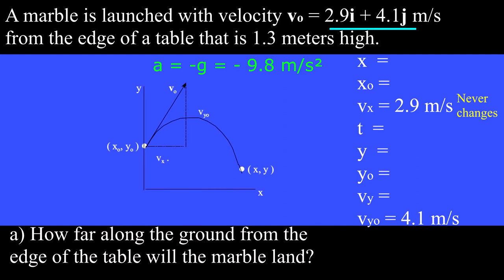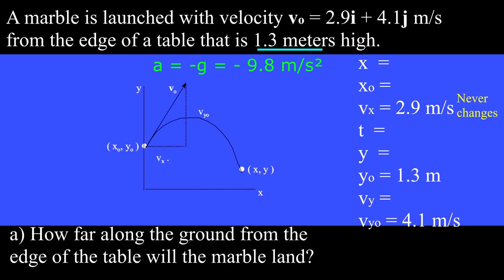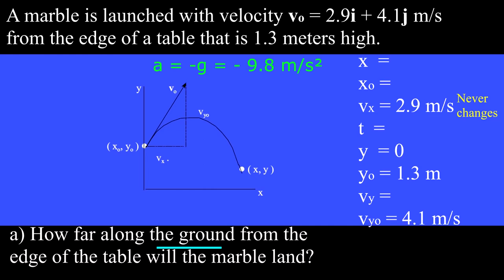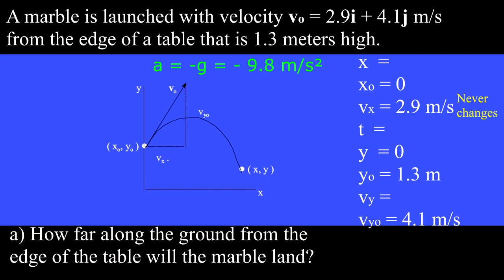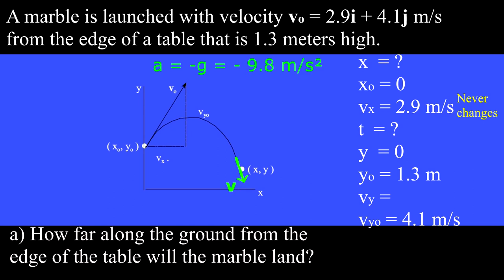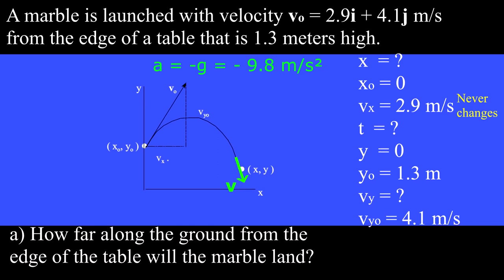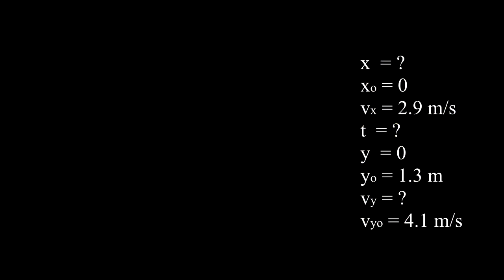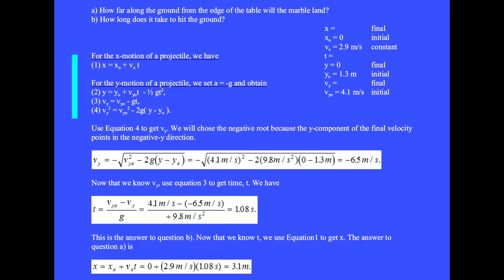The y component of the initial velocity vector is v sub y zero equals 4.1 meters per second. The launch height 1.3 meters is y sub zero. We land at the ground, so y equals zero. The motion begins at x sub zero equals zero. We don't know where the object lands or how long it will take. The final velocity's y component is unknown, but its x component will still be 2.9 meters per second. Now that we know which 5 variables we know and which 3 we don't, we look at the four equations to find one with a single unknown. In equation 1 we don't know x or t, so we cannot use it at this moment.